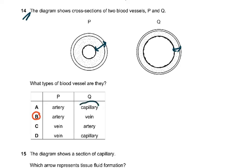A capillary is only one cell thick — it only has the endothelium, which is the inner lining. So in a diagram comparing artery, vein, and capillary, the capillary would only have this innermost layer. P was the artery, Q was the vein.